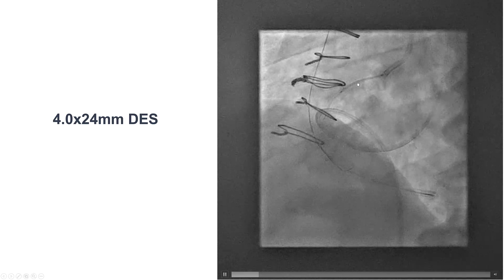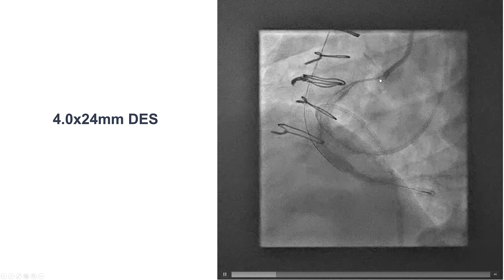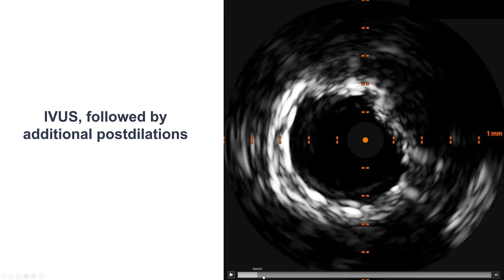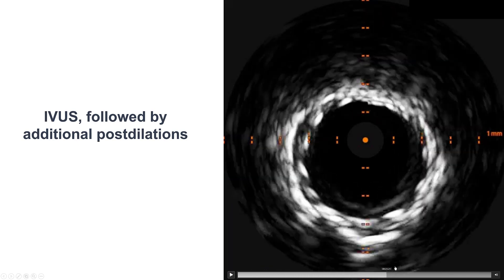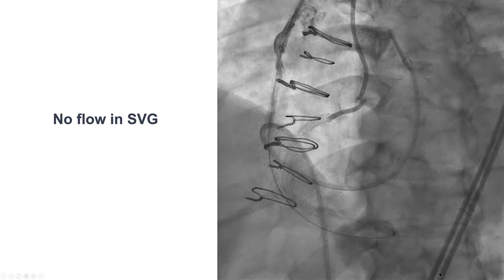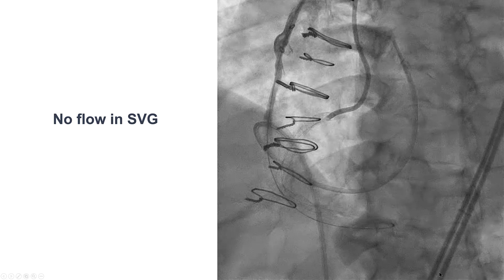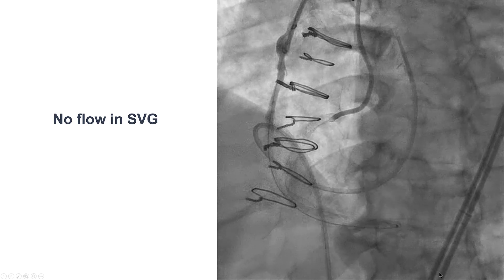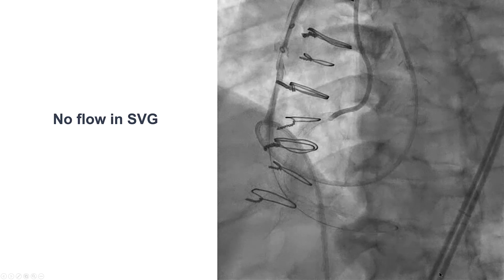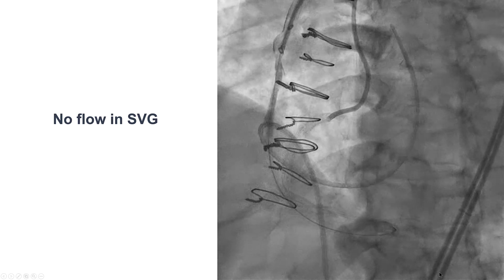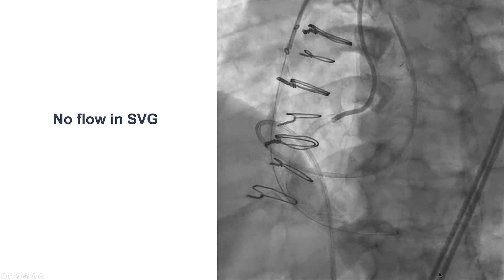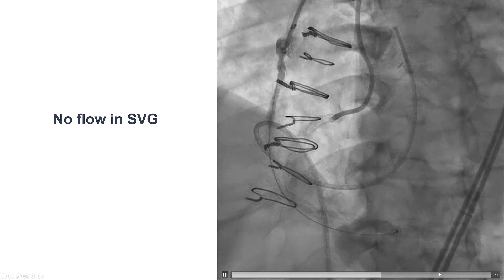We placed additional DES stents from the distal RCA into the proximal right coronary artery, with a final stent all the way to the ostium. We performed intravascular ultrasound to check the result, and there was good stent expansion and stent strut apposition throughout the area of the occlusion. After restoring flow through the native coronary artery, flow into the saphenous vein graft significantly decreased. We debated occluding the saphenous vein graft using coils or an Amplatzer vascular plug, but decided not to because the flow was not very high.